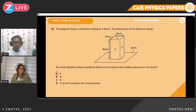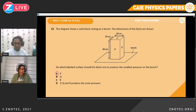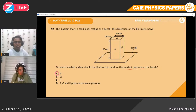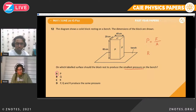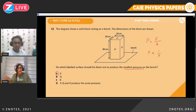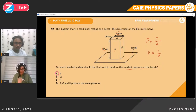Question twelve. The diagram shows a solid block resting on a bench. On which labeled surface should the block rest to produce the smallest pressure? From the equation pressure = force/area, pressure is inversely proportional to area — the bigger the area, the less the pressure. We need to take the biggest area, which is 80 × 40. So the answer is P.